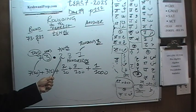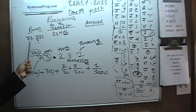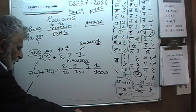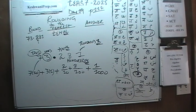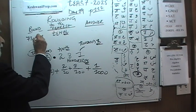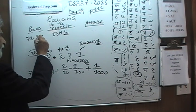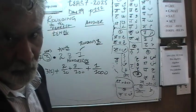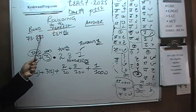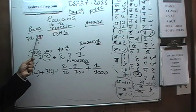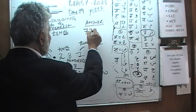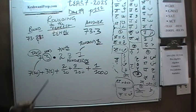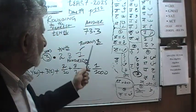We are being asked to round 73.281 to the nearest tenths digit. The digit that comes right after the tenths place is 8. Since 8 is more than 5, this rounds up: 73.281, when rounded to the nearest tenth, becomes 73.3.